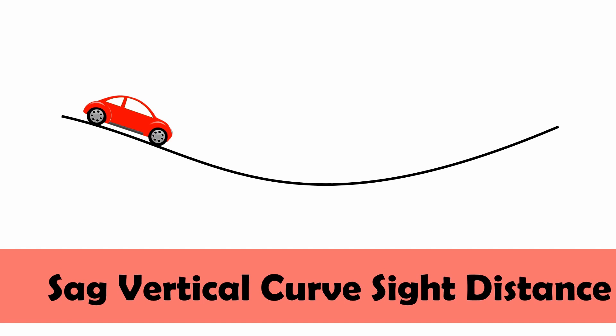In this image we see a sag vertical curve — that's a negative grade followed by a positive grade. When we're thinking about sag vertical curves and the sight distance that's required, we're thinking about nighttime conditions and specifically how far in front of our vehicle our headlights will illuminate. What we're considering is a one-degree deflection upward from the line of the headlight that extends directly straight from the vehicle.